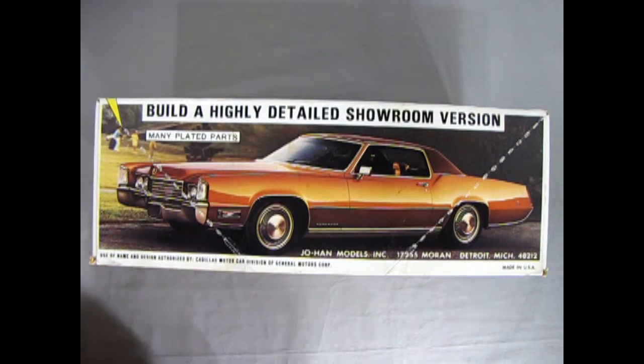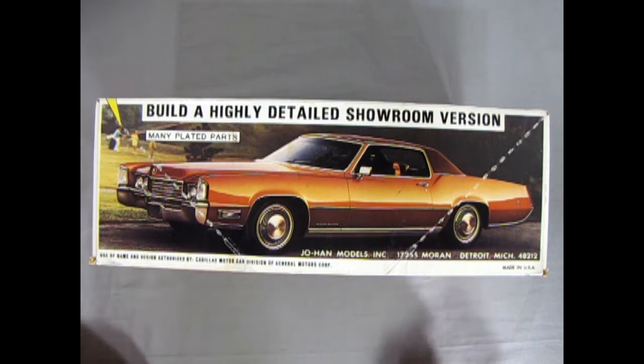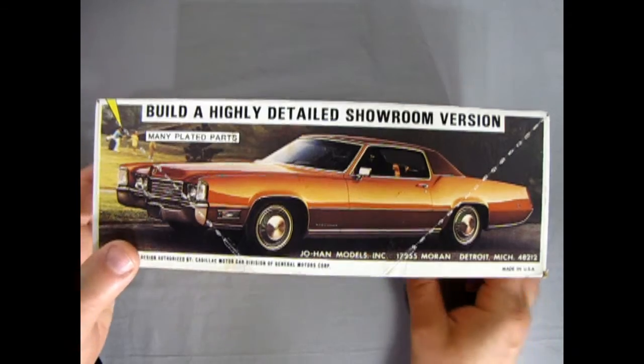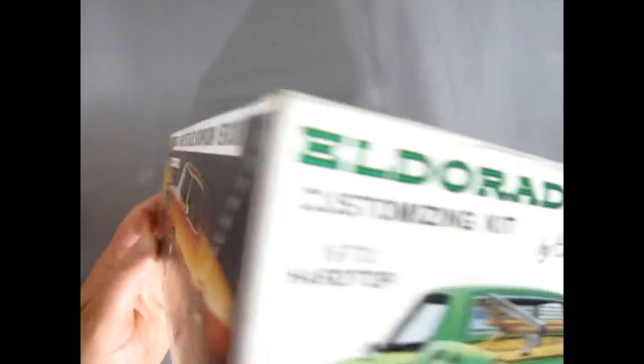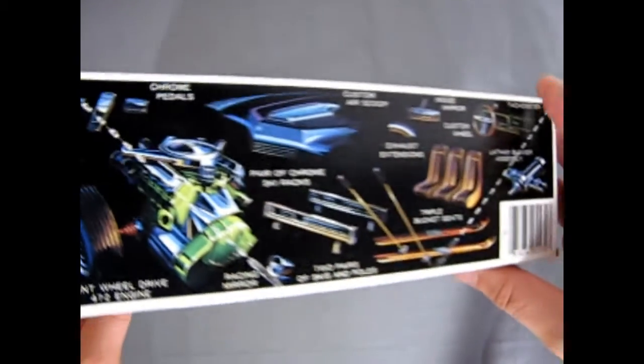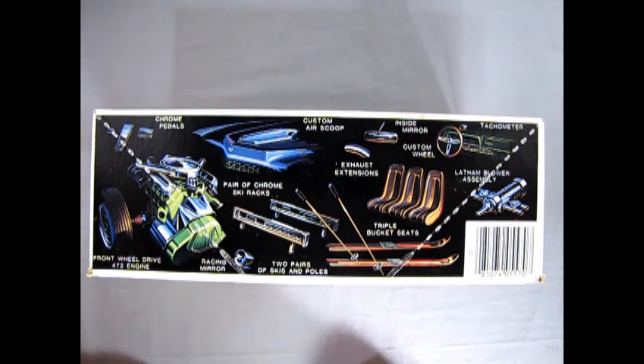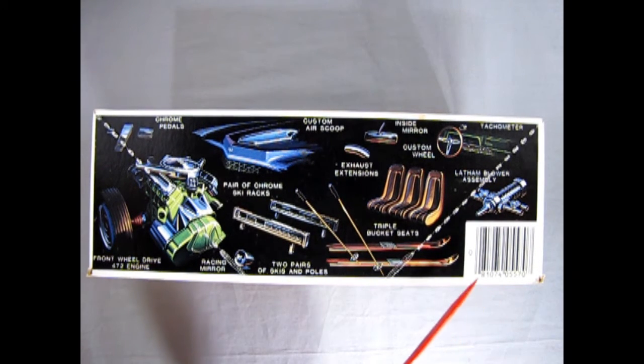But anyway, it doesn't matter. On the side of the box here, we can see the amazing looking stock variation of this kit. Painted in a brown color. Metallic brown, which was a popular choice getting into the 70s. You'll see that many, many times over and over. This is build a highly detailed showroom version. Many plated parts. Cadillac in the park. Okay, the end of the box looks much the same. Everything crashing in there. Now this is a later re-release because you can see, of course, the barcode.